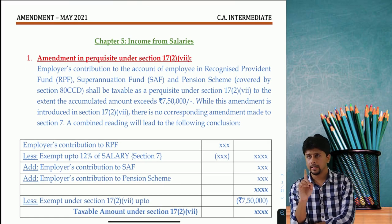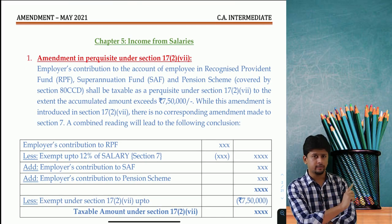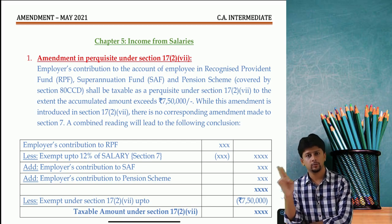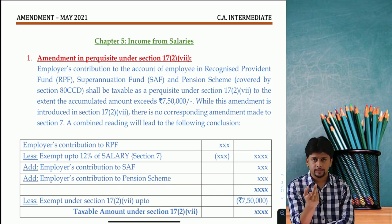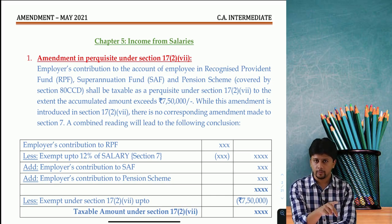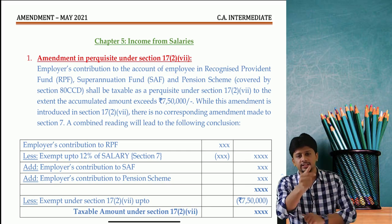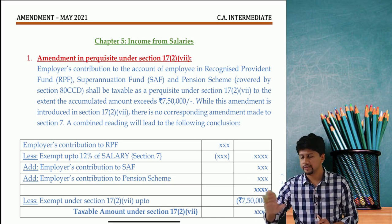There is no amendment in the head of income for House Property. Whatever you studied for November 2020 exams is the same for May 2021 exams. Just change the year from 19-20 to 2021 and all questions and solutions remain the same.